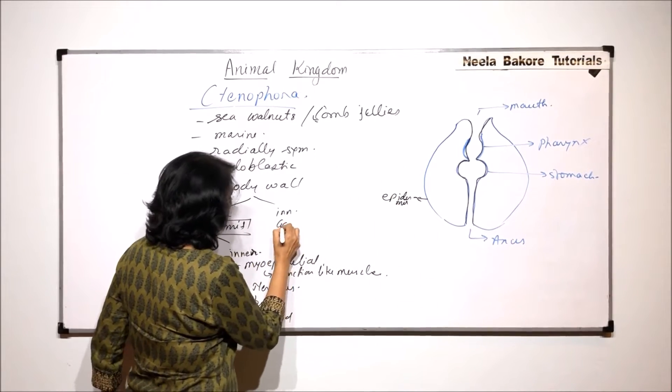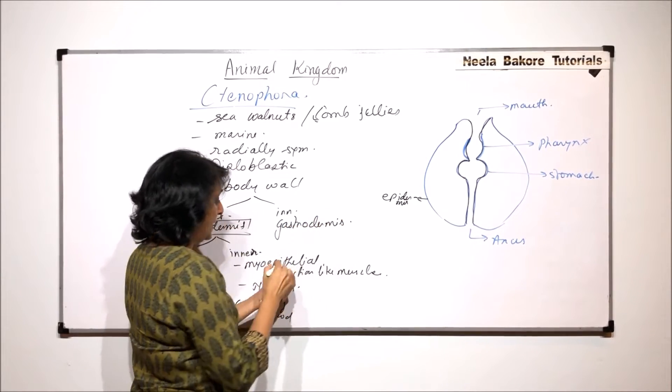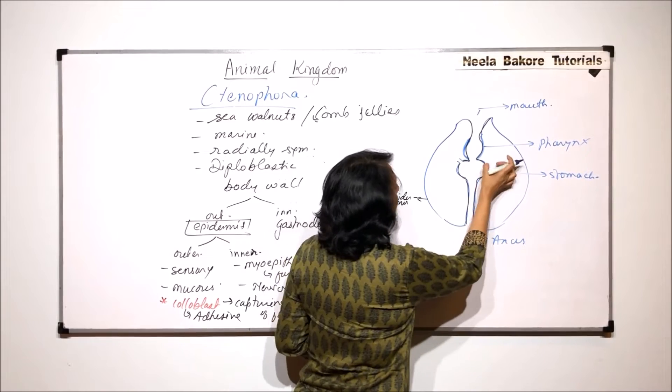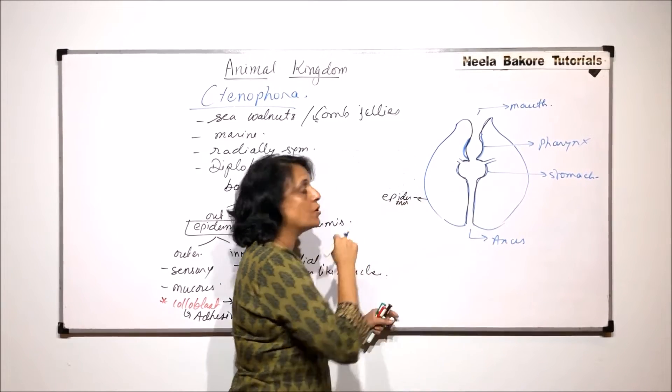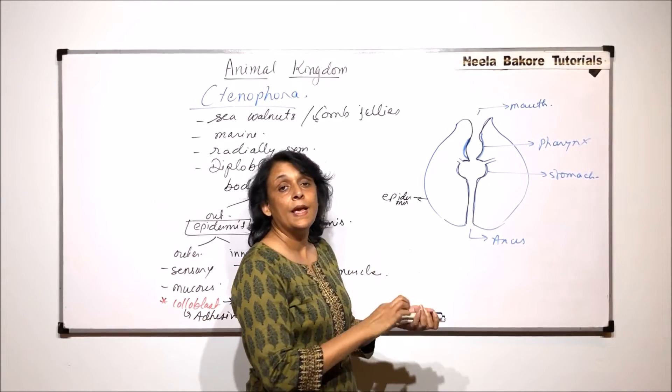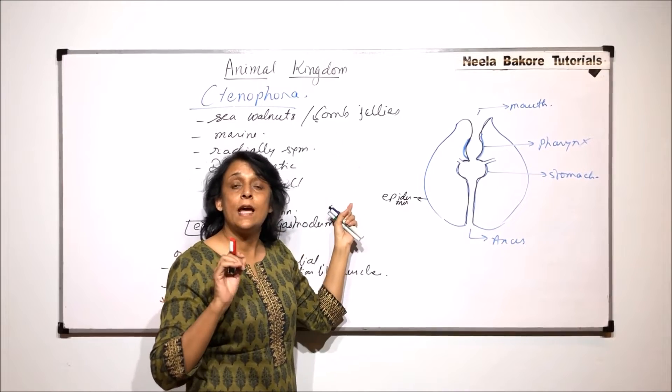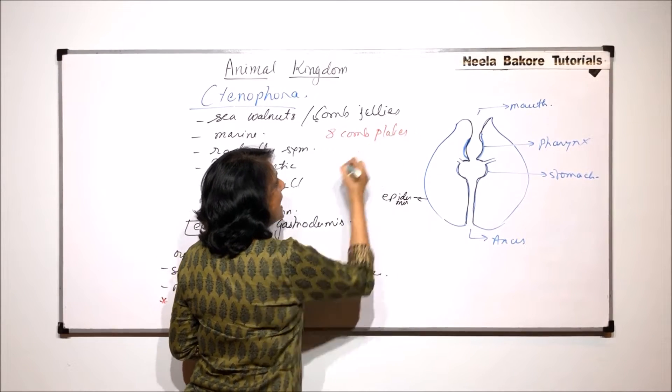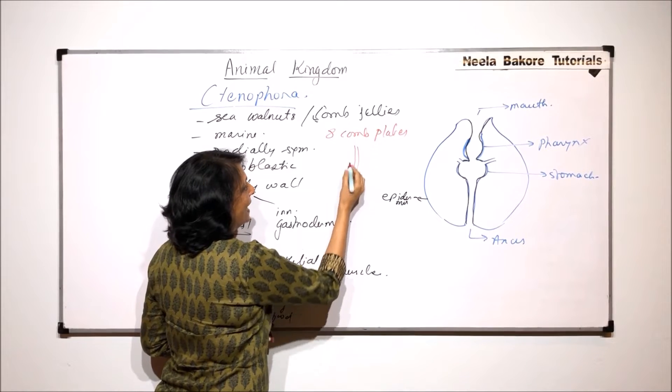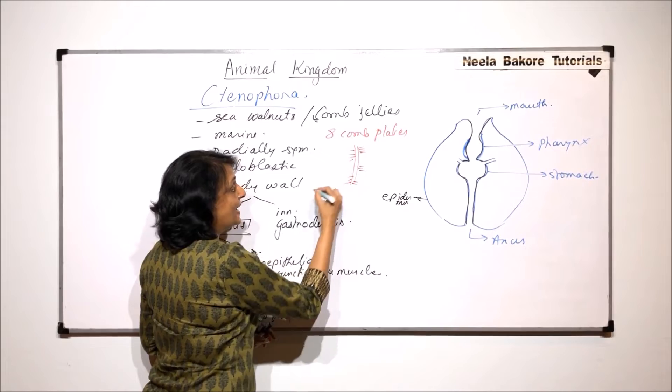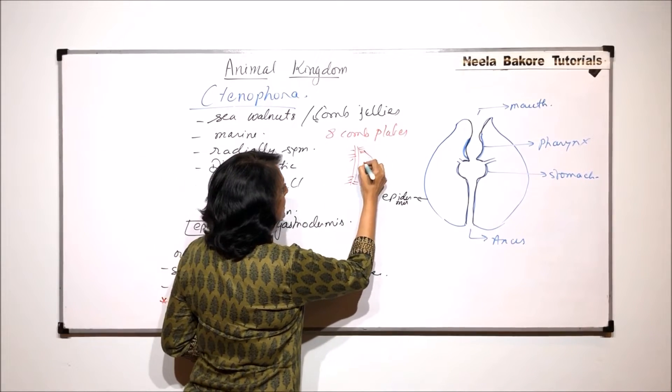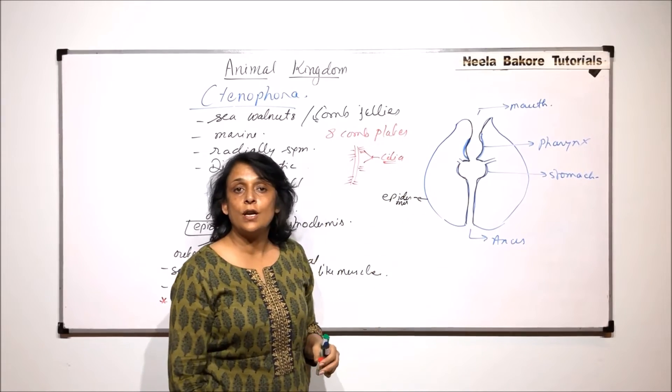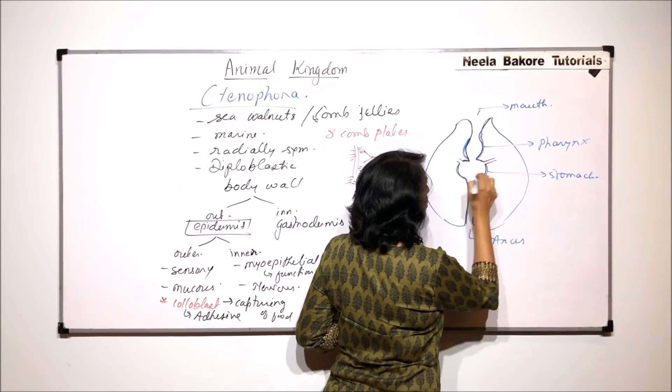This gastrodermis layer also produces some canals. So here from the stomach there would be a canal and these canals would be going to various structures. For example, if we are talking about this comb jelly name, that means they have comb plates. So there are eight comb plates which they have, and these comb plates are nothing but a comb canal around which there are cilia. And these cilia help in locomotion.